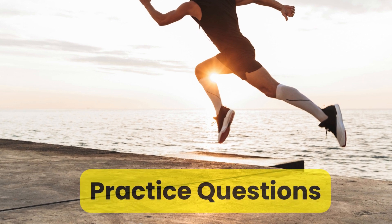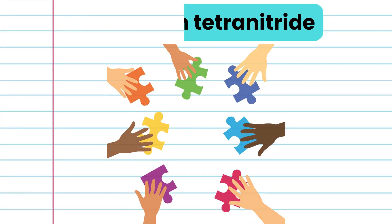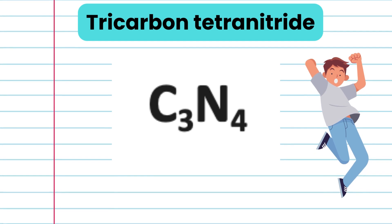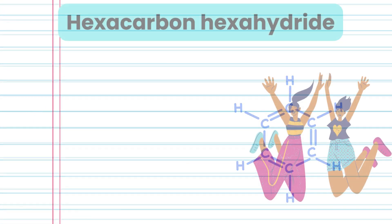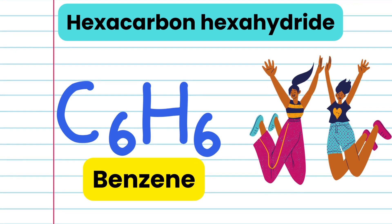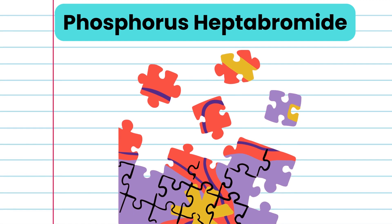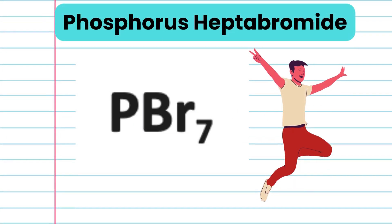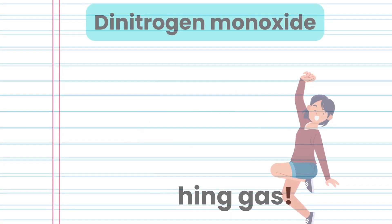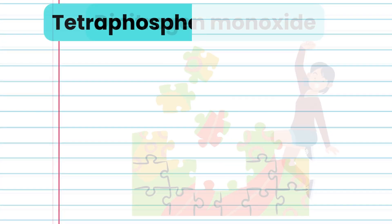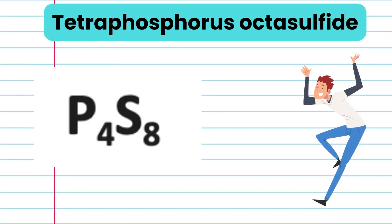Practice questions. 1. Tricarbon tetranitride — C3N4. 2. Hexacarbon hexahydride — C6H6. 3. Phosphorus heptabromide — PBr7. 4. Dinitrogen monoxide — N2O. 5. Tetraphosphorus octasulfide — P4S8.